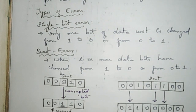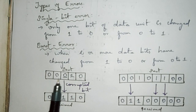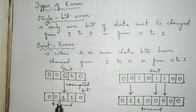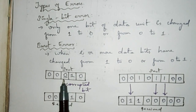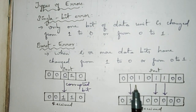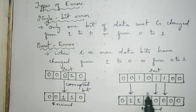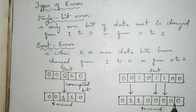Let us see in this diagram. This is the sent data and this is the received data. Here a 0 is corrupted and changed to 1, so this is called a single bit error. Whereas in the burst error diagram, two or more bits are changed — 0 to 1, 1 to 0, and 1 to 0 — so this kind is called a burst error.